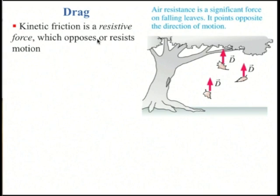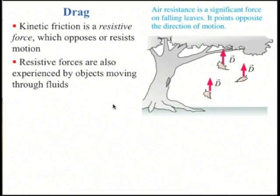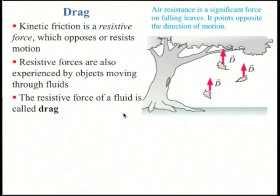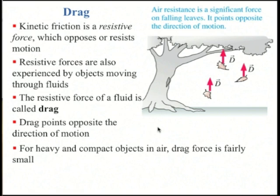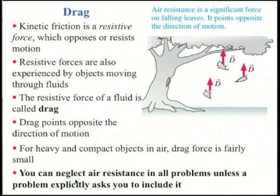Kinetic friction is a resistive force which opposes or resists motion. Resistive forces are also experienced by objects that move through fluids, such as air. The resistive force of a fluid is called drag, and drag points opposite the direction of motion. Here's a bunch of leaves falling off a tree — they're moving downwards, so there's a drag force pushing them upwards. For heavy and compact objects in air, like baseballs, the drag force is relatively small compared to gravity, so usually you can neglect air resistance unless a problem explicitly asks you to include it.